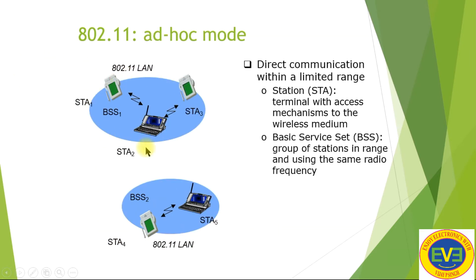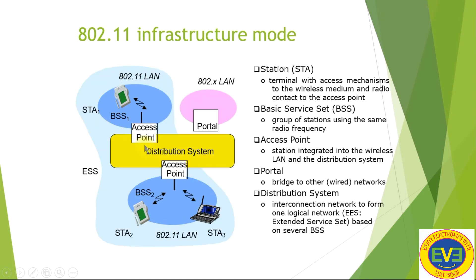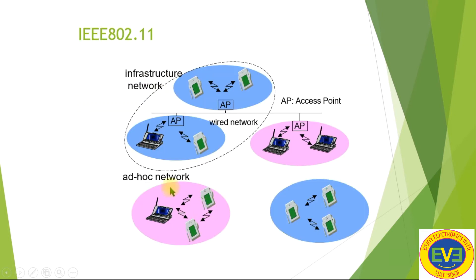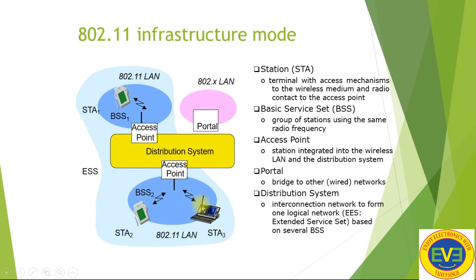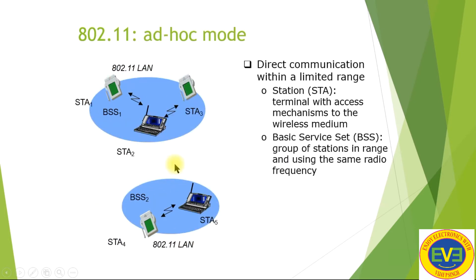In ad-hoc mode, there is direct communication within a limited range. A station is a terminal with access mechanism to the wireless medium. A BSS in ad-hoc mode is a group of stations in range using the same radio frequency.